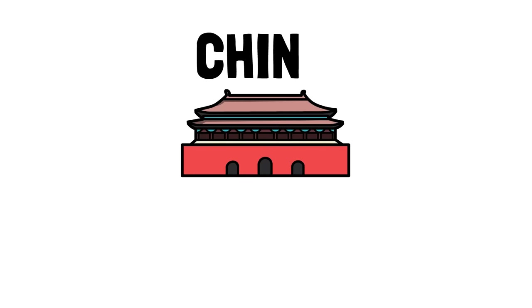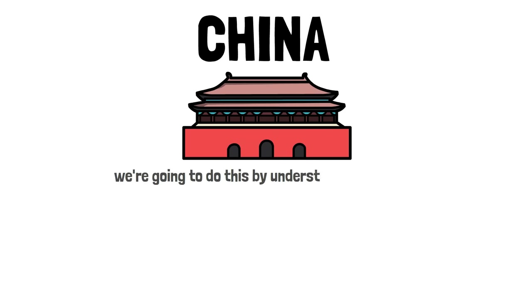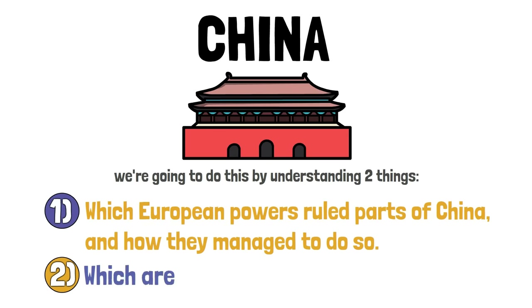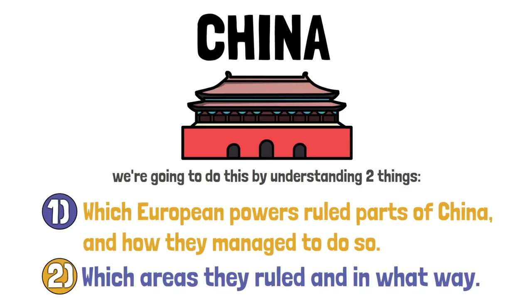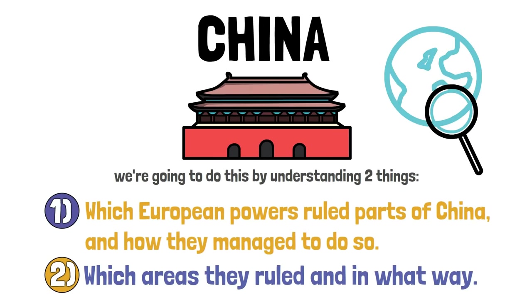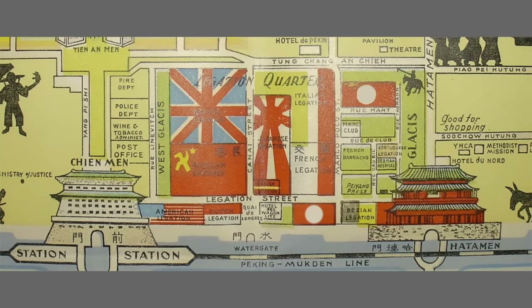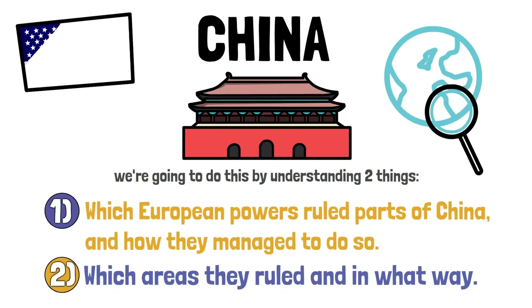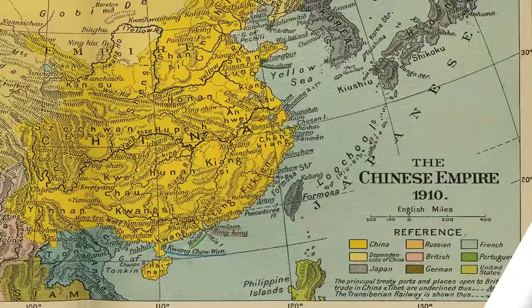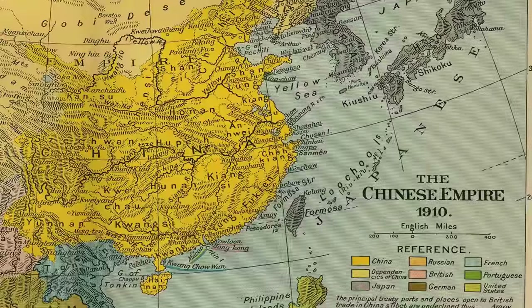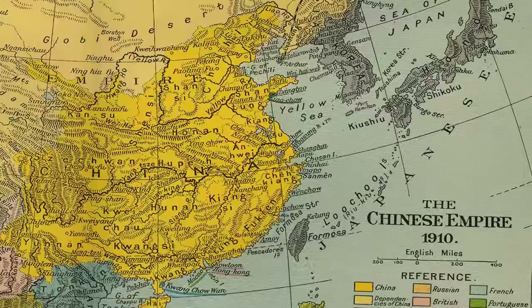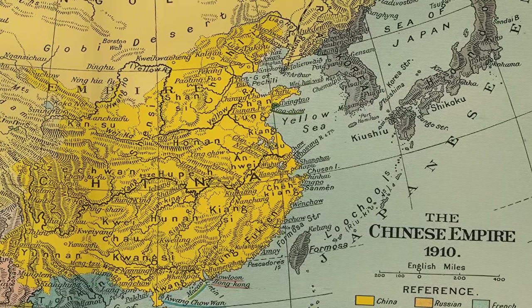In this video, we're going to focus on China and learn how European powers, at one point, held great power over the country, despite never fully colonizing it. We'll do this by understanding which European countries ruled parts of China and how they managed to do so, and which areas they ruled and in what way. We also need to point out that both the United States and Japan also held colonial control of some Chinese regions in similar or even equal ways to the Europeans.